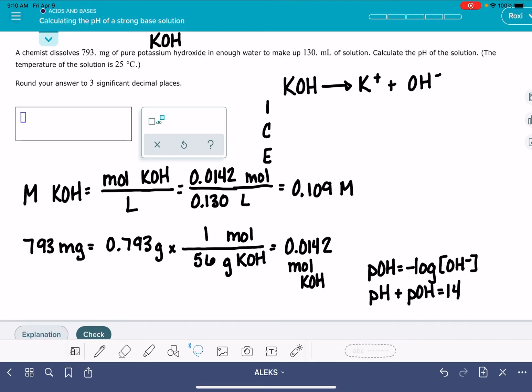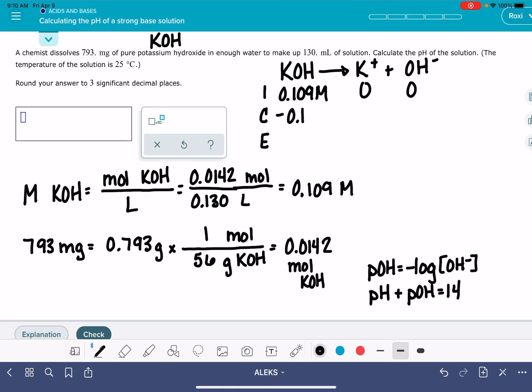And like I said, if you wanted to do this with an ICE table, you absolutely could. 0.109 molar, that's our initial amount of KOH. Because it's a strong base, all of that is going to dissociate. And at the very end, what we're going to be left with is 0.109 molar OH-. You could also just recognize that this is a one-to-one ratio. So whatever the molarity is of the KOH, that's also going to be the molarity of the OH-.